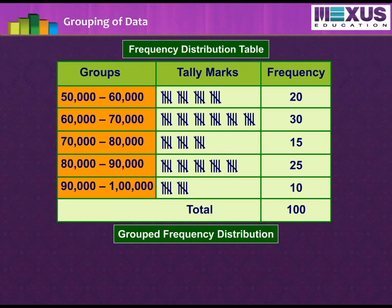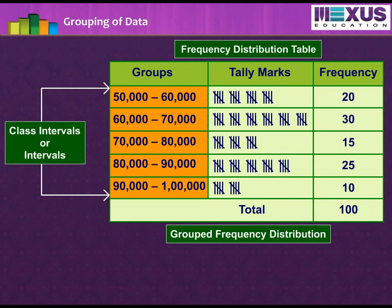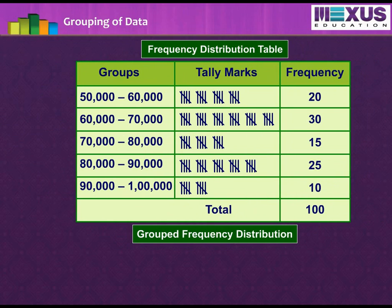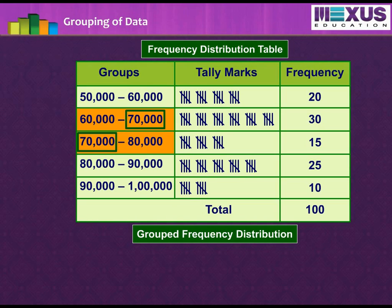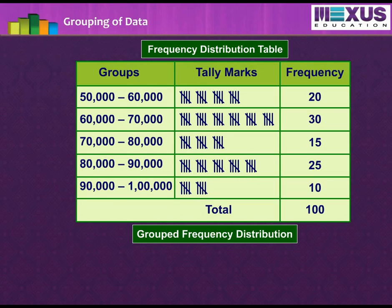Each small group divided is called a class interval or interval. We can observe that 60,000 is occurring in both the classes 50,000 to 60,000 and 60,000 to 70,000. Similarly, 70,000, 80,000, and 90,000 are repeating, but we cannot mark a single entry twice. Therefore, to avoid confusion, we mark a tally for the common observation in the higher class. That is, for 60,000, mark a tally in the group 60,000 to 70,000, and not 50,000 to 60,000.